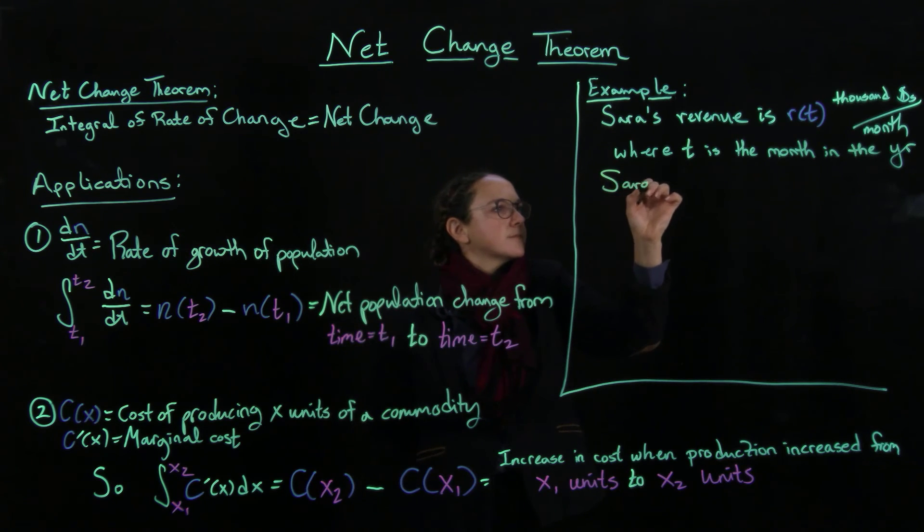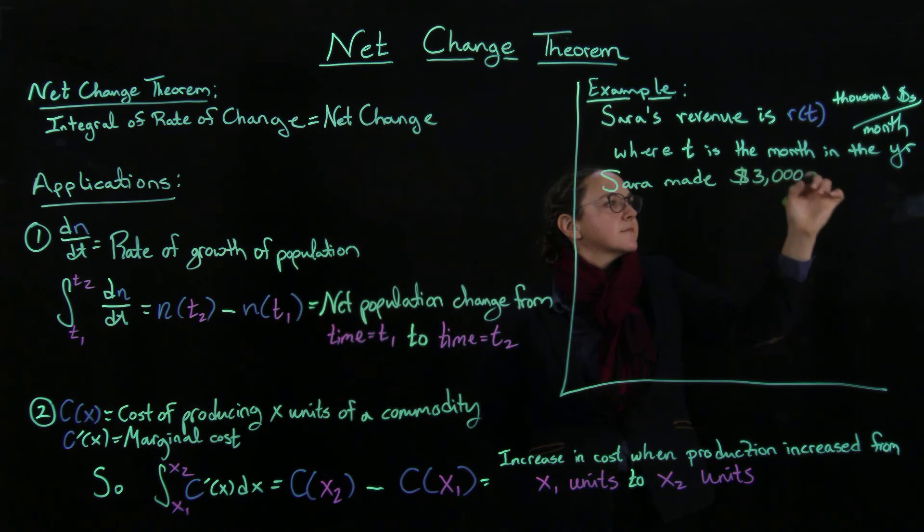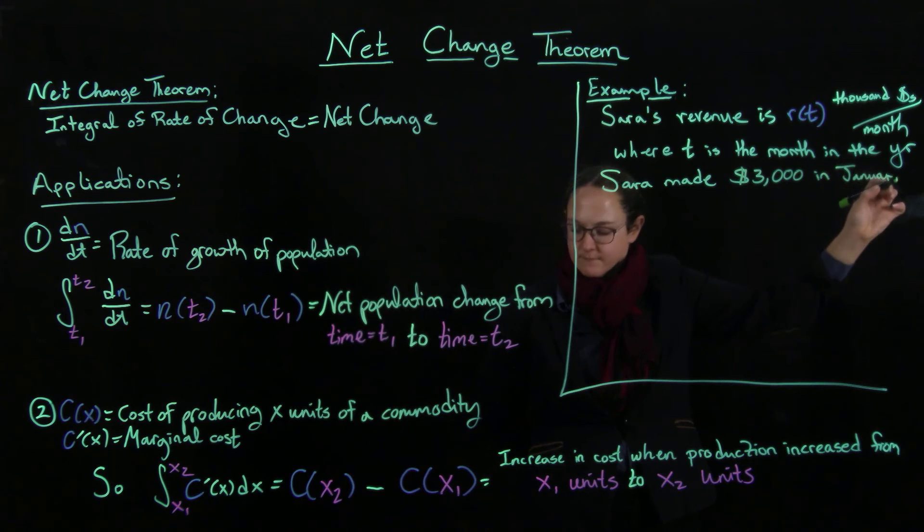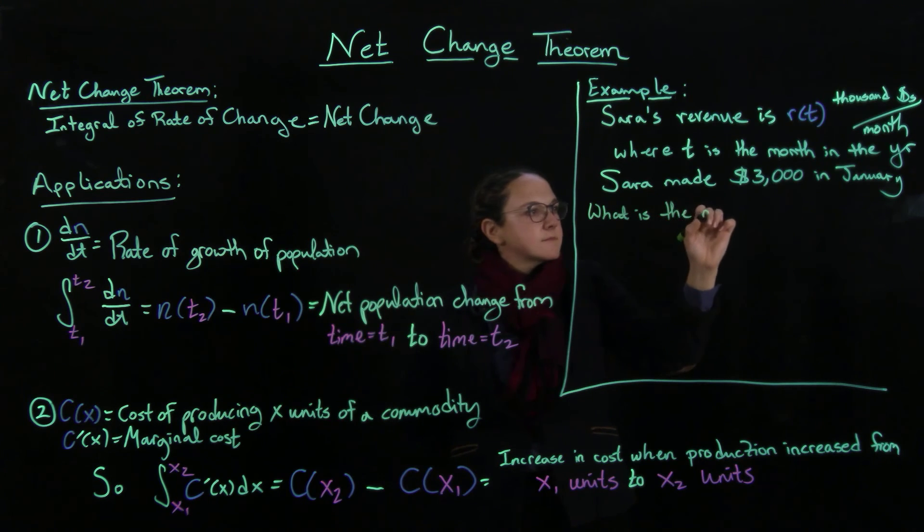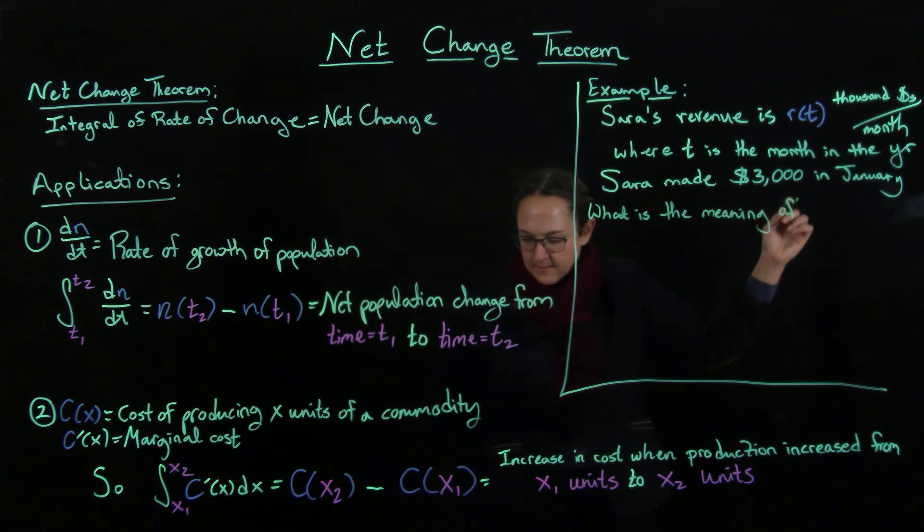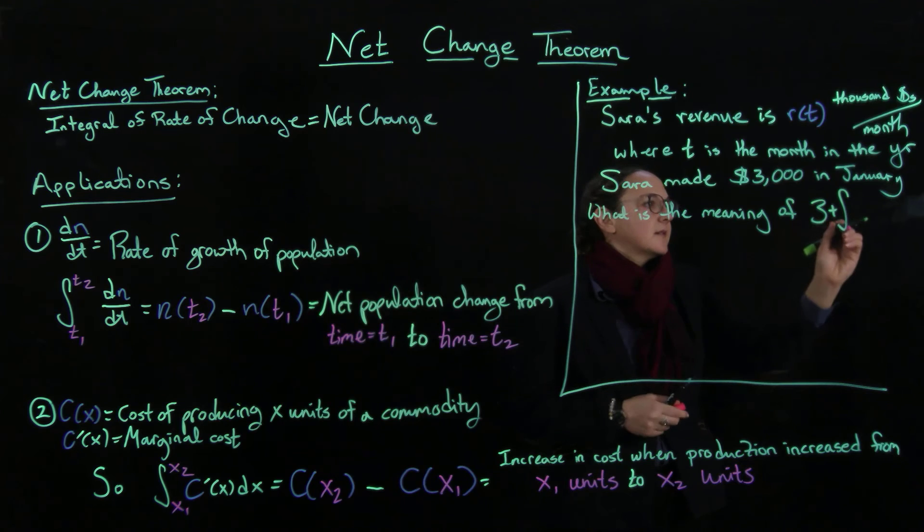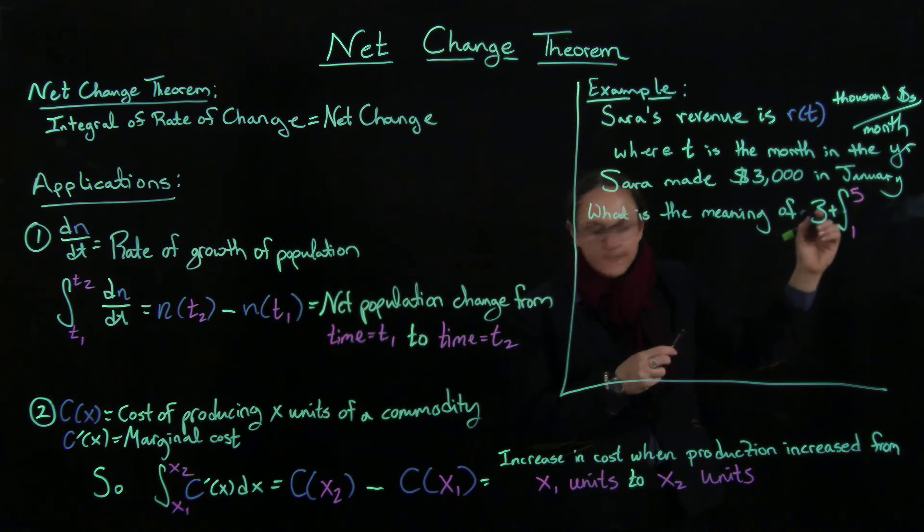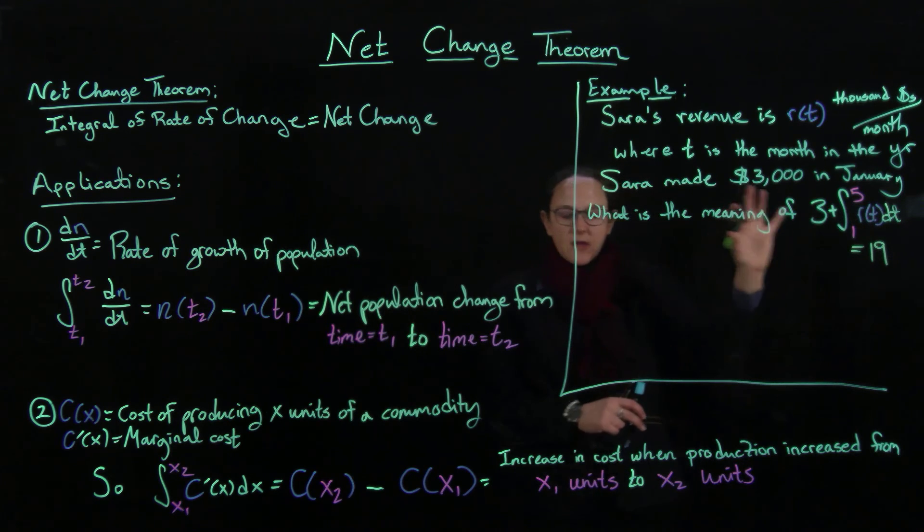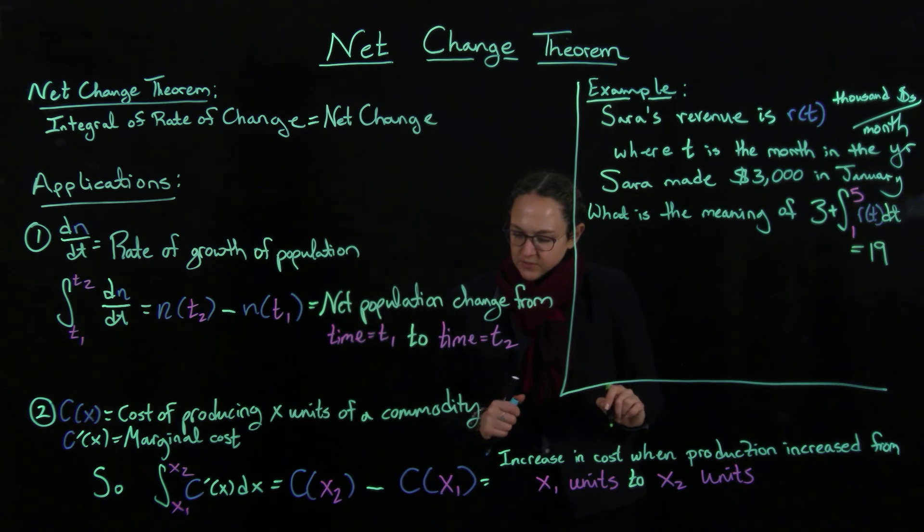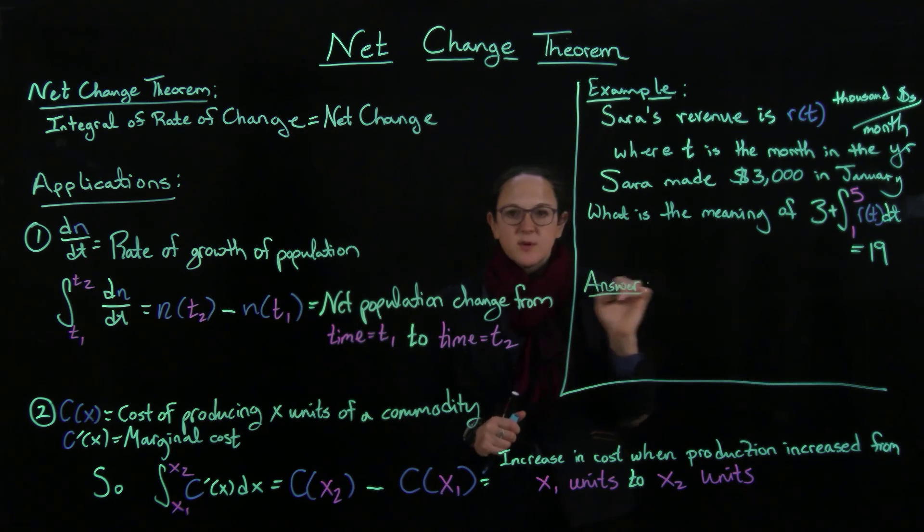So Sarah made three thousand dollars in January. What is the meaning of 3 plus the integral, and then we'll be a little consistent in our color coding here, 1 to 5 of R of T dt equals 19. So if that whole integral there equals 19, the question is what is the meaning of this? And the answer is, I'm going to pause a second because I'm going to put a question into this video.